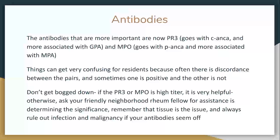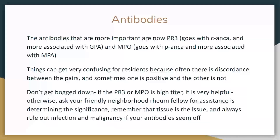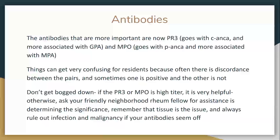Things get very confusing for residents — another thing I get asked a lot. If there's a discrepancy between the antibody pairs — say they're PR3 positive — think about it: it could still certainly be ANCA vasculitis, but think about malignancy, early undiagnosed malignancy, or infection in those cases. Especially if all the antibodies are positive — think about infection. Anti-GBM antibodies are very helpful, super helpful for MPO.